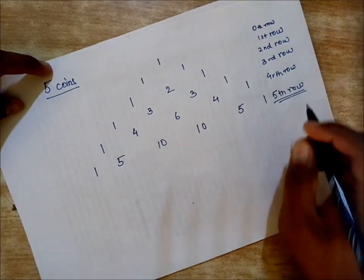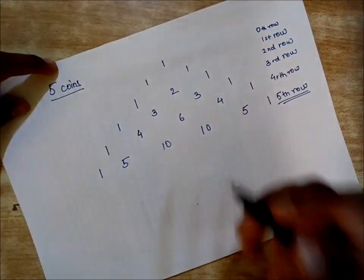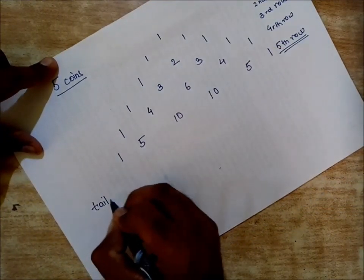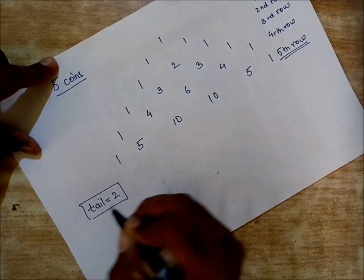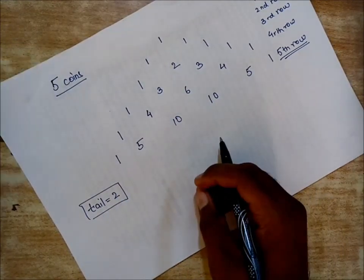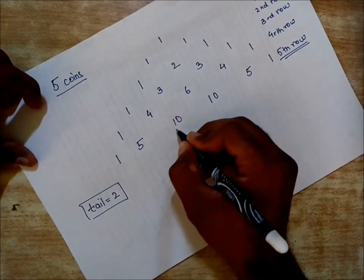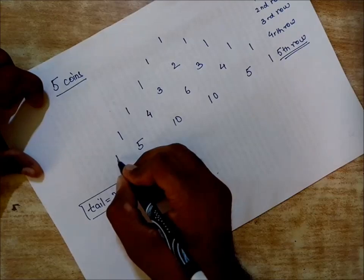This is the row which we wanted because we have five coins. Our question is: the tail should occur twice. We want the combination when tails are occurring twice. Each element of this row will tell you how many tails are available.